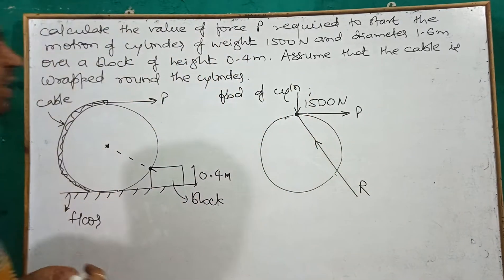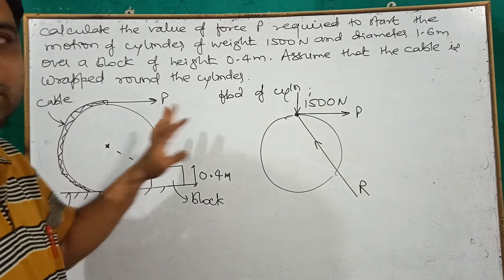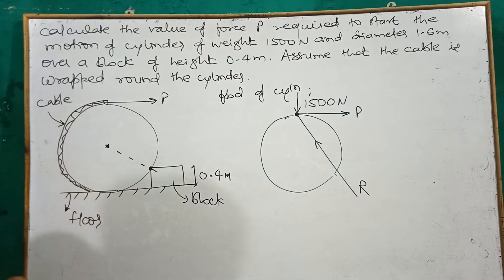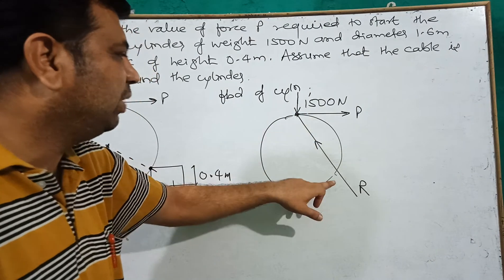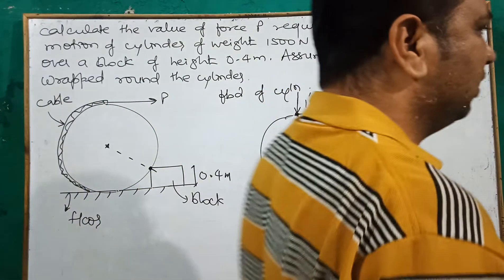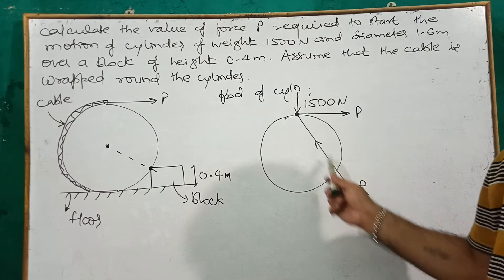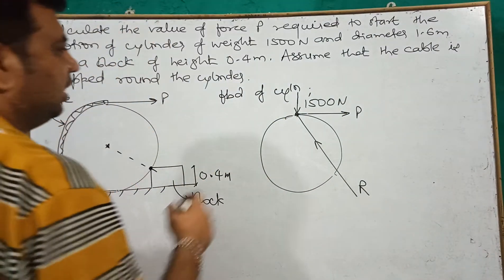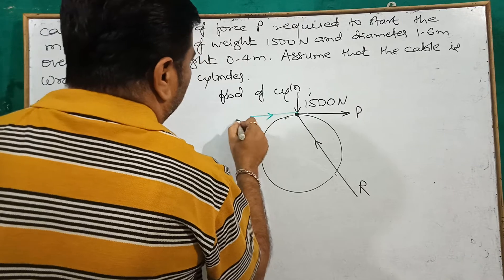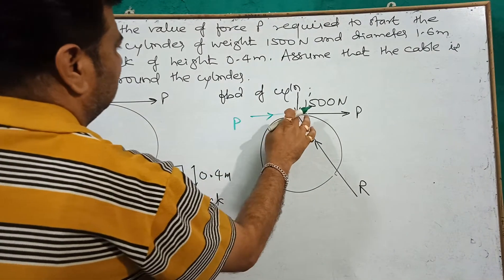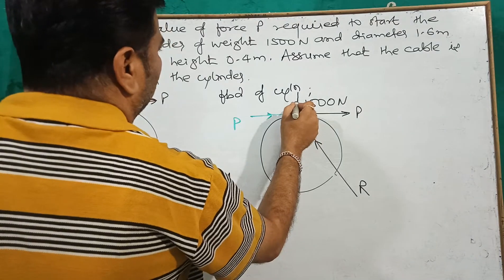We will be taking the FBD at the point at which force P is acting — this is the most important part of this problem. The FBD is taken at the topmost point where force P acts; that is the point of application, and that is where the reaction also acts. For Lami's theorem, three forces should be there: 1500 N weight, P, and reaction R. By transmissibility, P is shifted to the back.